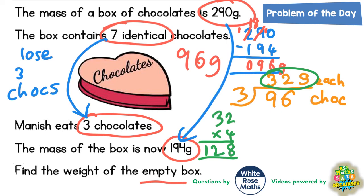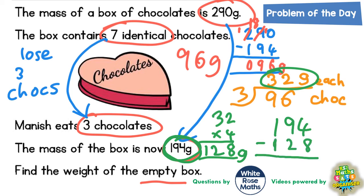Once those chocolates are gone, the box will be empty. So to remove those chocolates, we take away the 128 grams they weigh from the current 194 grams. If we take away 128 from 194, all the chocolates will have been eaten out of the box, and whatever's left will be the weight of the empty box. 4 take away 8 we can't do — borrow from the 9, it becomes an 8, and the four becomes 14. 14 take away 8 is 6. 8 take away 2 is 6, and 1 take away 1 is nothing. So the final answer is 66 grams — the weight of the empty box is 66 grams.